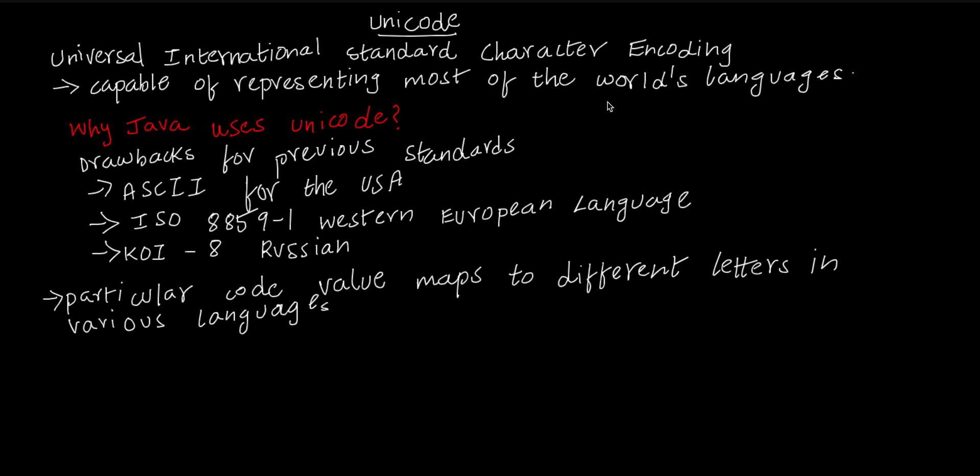For example, Tamil, English, Spanish, Russian — all of these characters are supported in Unicode. So why does Java use Unicode?